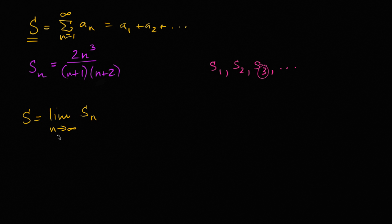Well, let's think about what this is. The limit as n approaches infinity of S sub n, that's just going to be the limit as n approaches infinity of this business right over here. Two n to the third power over n plus one times n plus two.